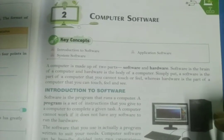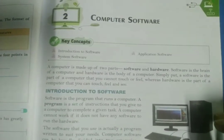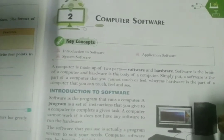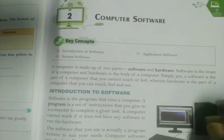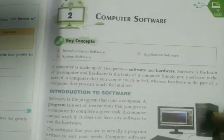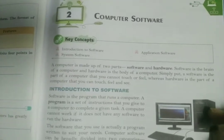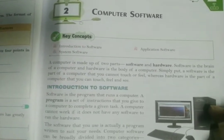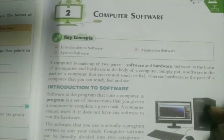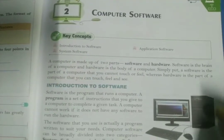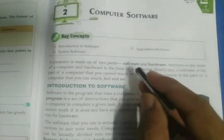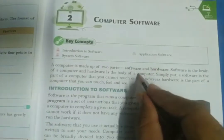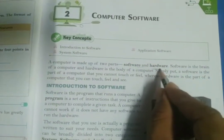Dear students, today we are going to start chapter number 2 of class 5th, computer software. As we all know that a computer is made up of two parts: software and hardware.